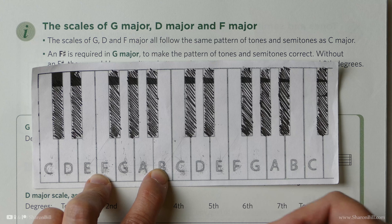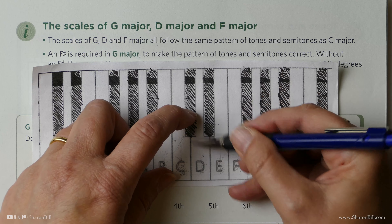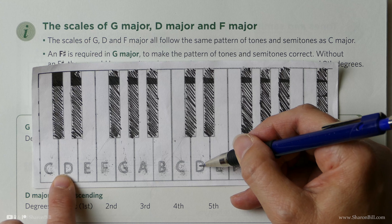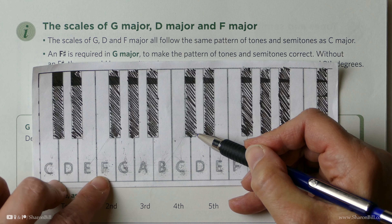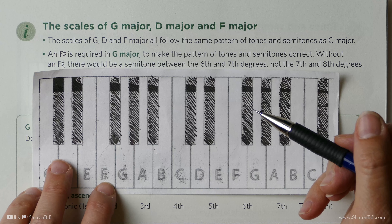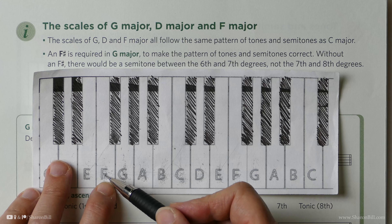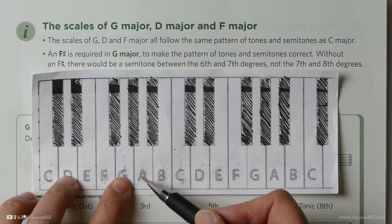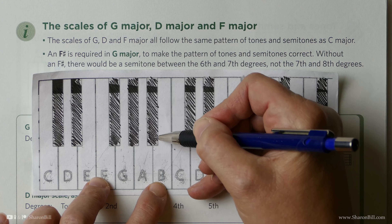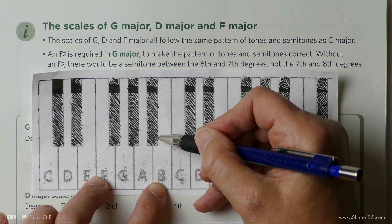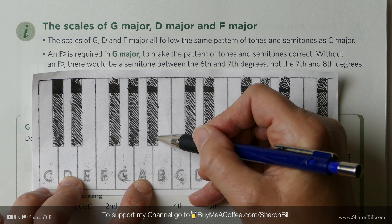Now let's look at it starting on D. We want tone, tone, semitone, tone, tone, tone, semitone — so three to four and seven to eight are semitones. D to E is a tone. Now we want another tone — that won't be correct with F natural, we need to go to F sharp. So the F is represented by F sharp; the sharp gives us that tone. Now we want three tones — tone, tone — but normal C won't do, we have to raise the C to C sharp to make it a full step. That gives us C sharp to D as the seven to eight semitone. So to get D major, we simply have to remember F sharp and C sharp.